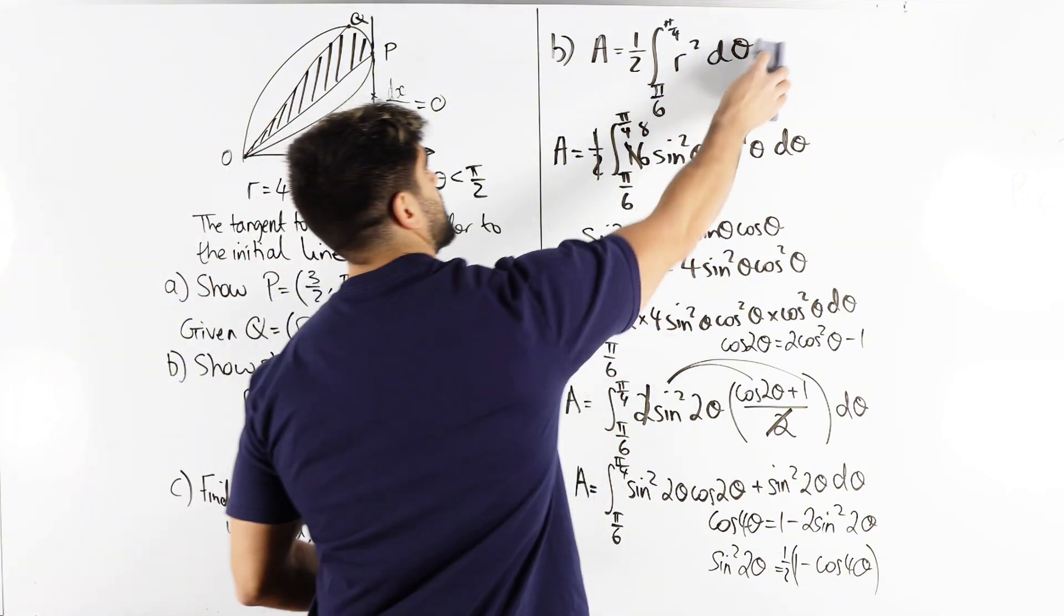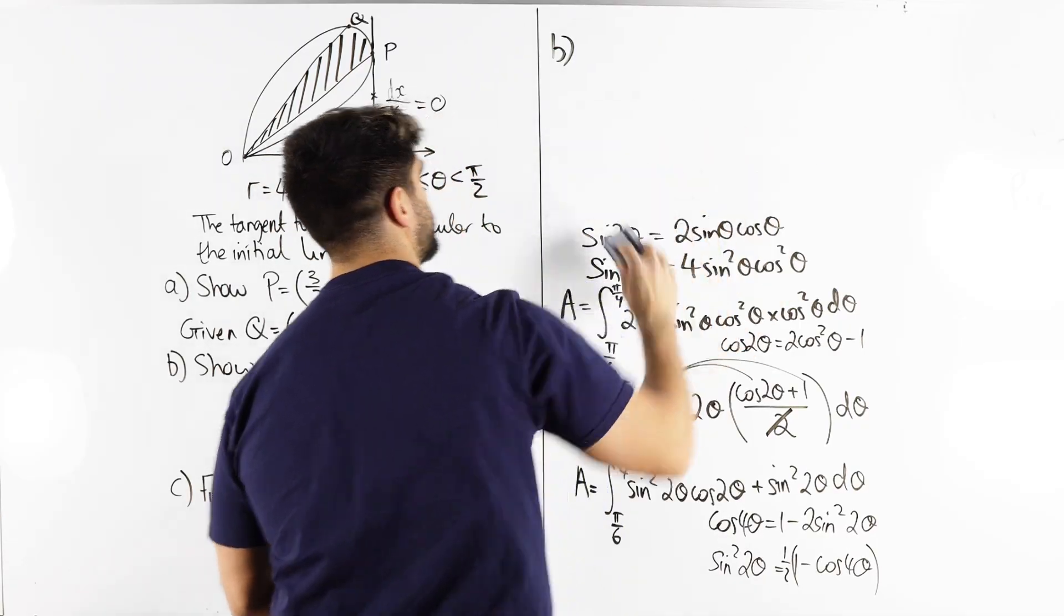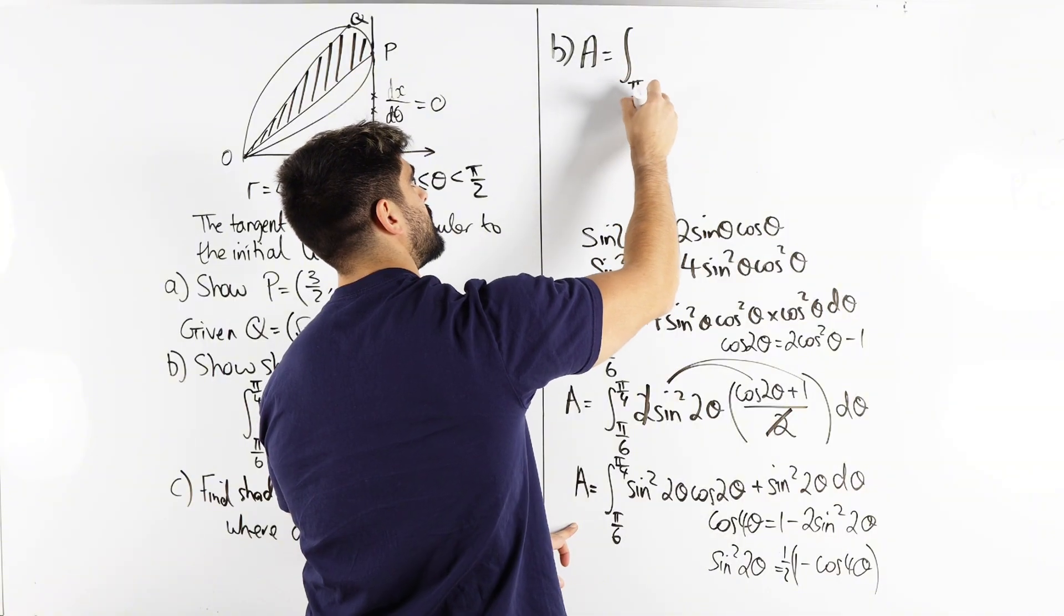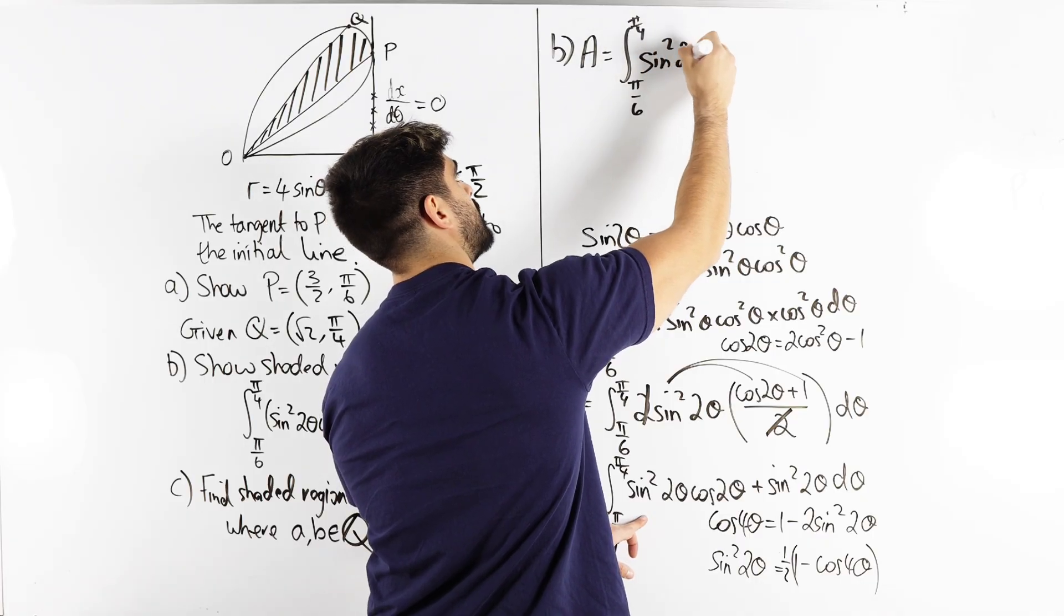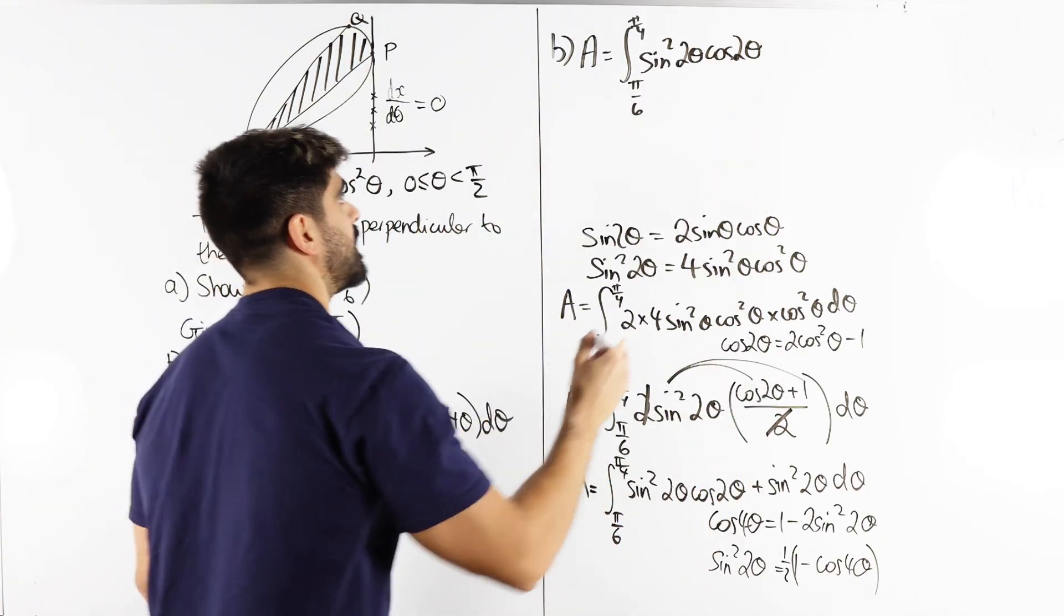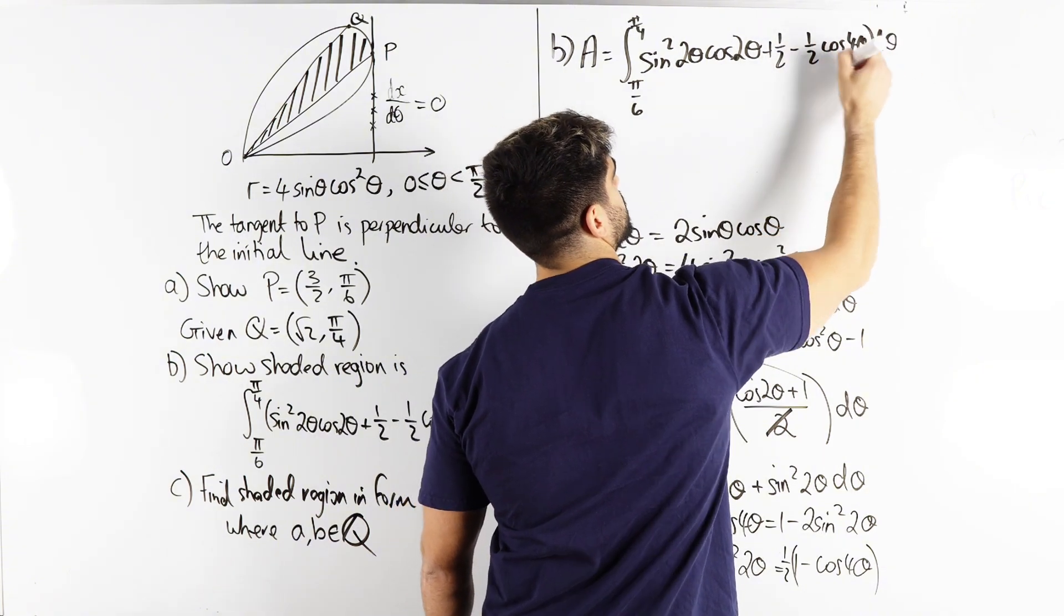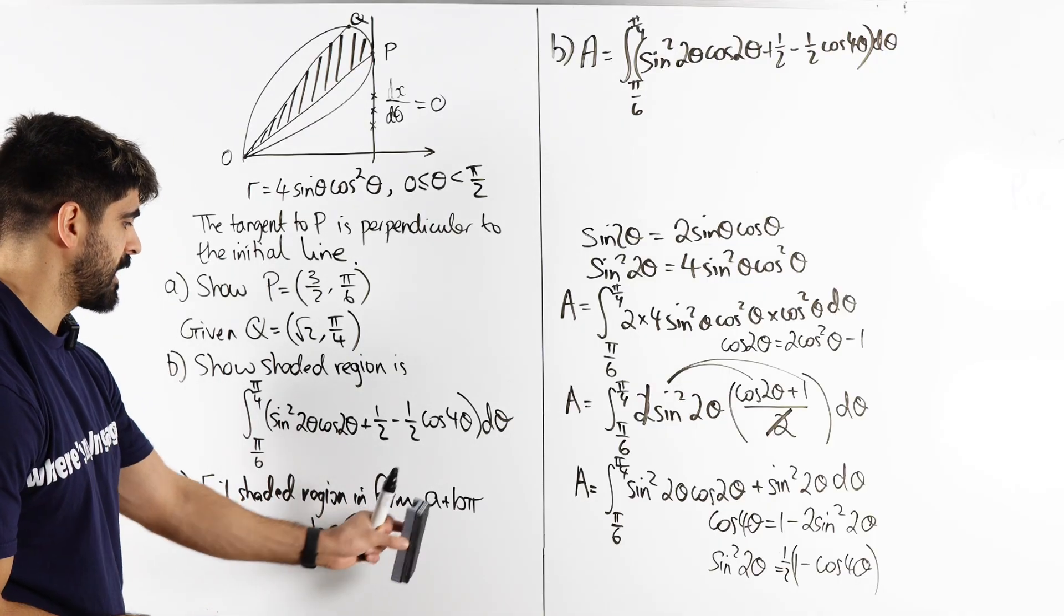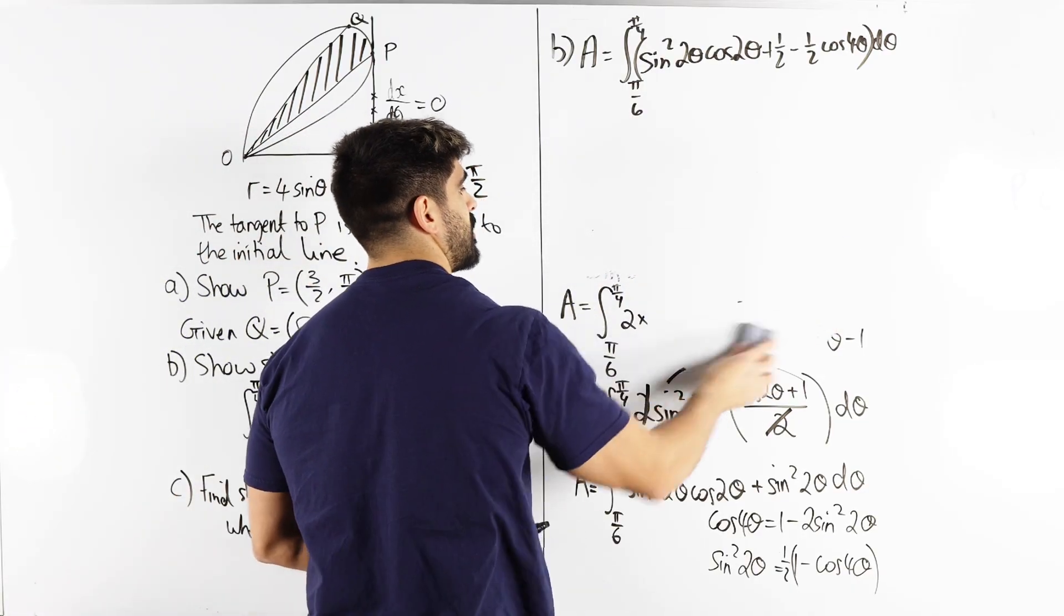And that's what we end up getting. So nice. I'm just going to write that answer up here and then we can basically proceed with the actual integration. So my A which is now proved between pi over six and pi over four is sine squared two theta cos two theta and then the rest of it plus a half minus half cos four theta d theta. Then it says find the shaded region in the form A plus B pi where A and B are rational numbers. So basically we just need to integrate that.